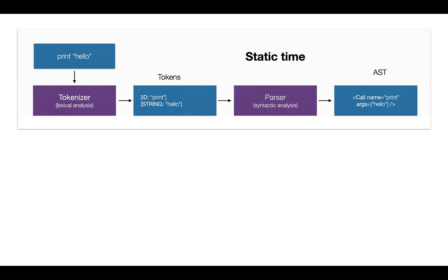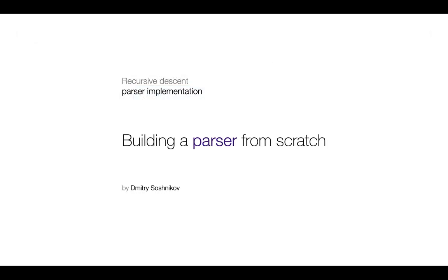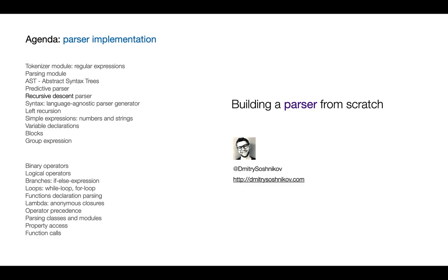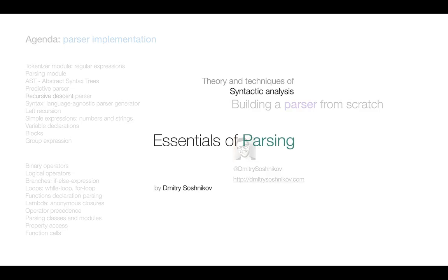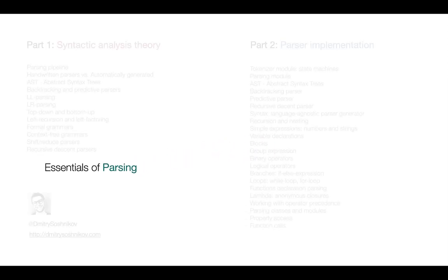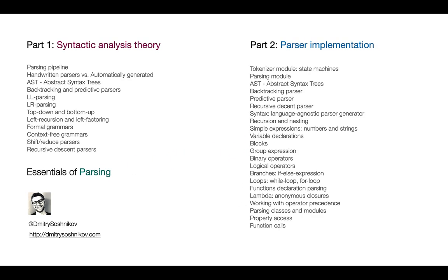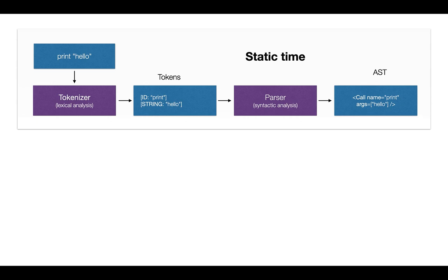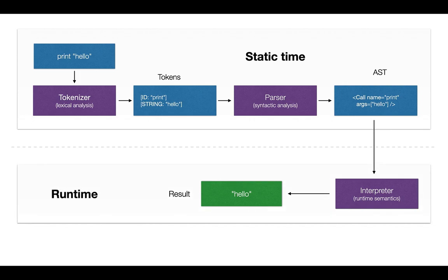This representation is something we can feed further either to a code generator to produce an intermediate representation — usually bytecode or native machine code — or we can pass it directly to the interpreter. To understand how to get from source code to the AST, you may consider two classes: 'Building a Parser from Scratch', a fully practical class where we parse a JavaScript-like language into AST, or 'Essentials of Parsing', a more theoretical class using a parser generator tool. This is exactly what we did in the Essentials of Interpretation class, getting a fully working language.